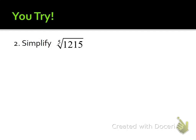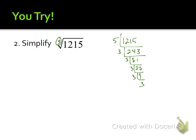Now try the fifth root of 1215. The index is 5, so it's going to take five guys to break one out. Breaking down 1215: 3 goes into 1215 giving 243, into 243 giving 81, into 81 giving 27, into 27 giving 9, into 9 giving 3. Now I'm looking for five factors that are the same. Here are five 3s — four get shot, so a 3 comes out and the 5 stays in. We get 3 times the fifth root of 5. Don't forget your index.